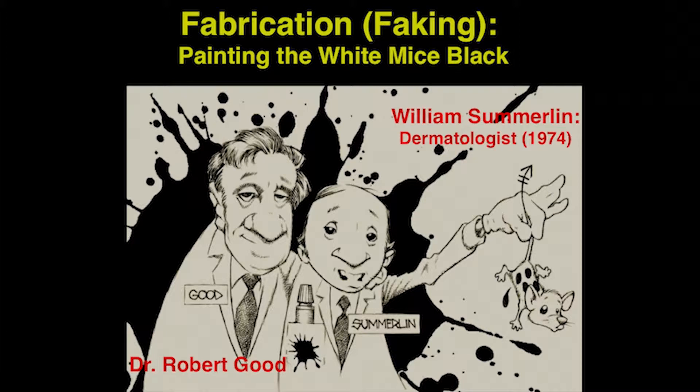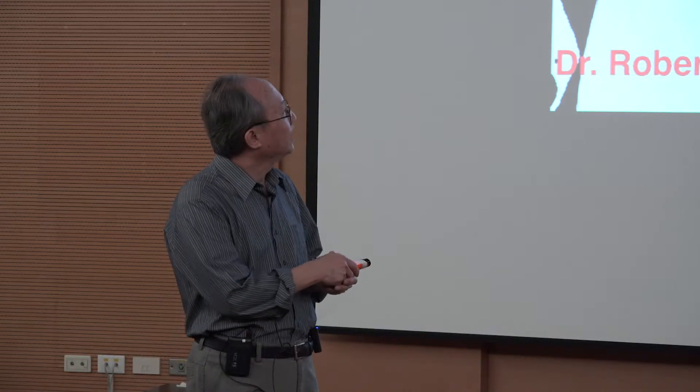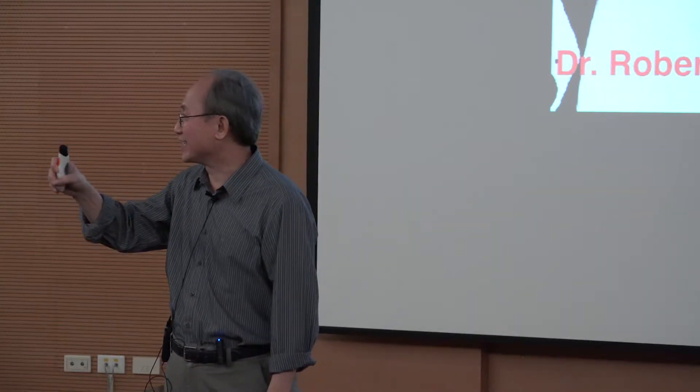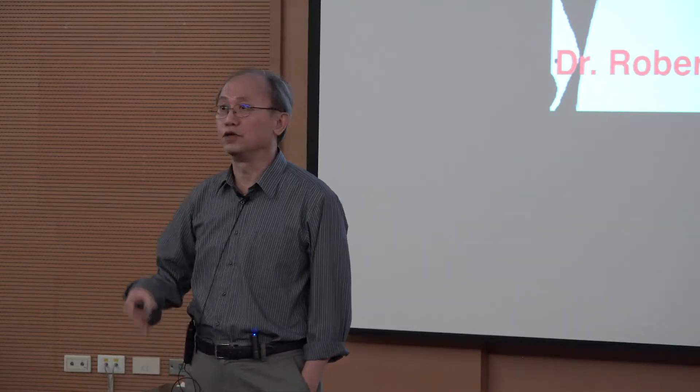Dr. William Somerlin is a dermatologist who was studying tissue incompatibility problems together with his supervisor. He ran an experiment and used ink to paint the mice. He got caught because a technician accidentally put a drop of water on the mice and the color just washed out. That is fabrication — you have not done anything but you just produce the result.